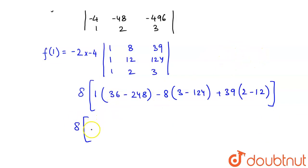So now, let's solve it further. So I get 8 into this determinant. So this is 1 into 36 minus 248, minus 8 times of 3 minus 124, plus 39 times of 2 minus 12.